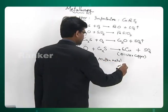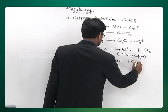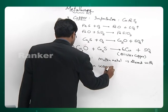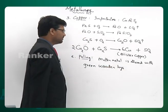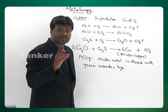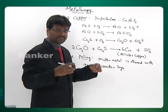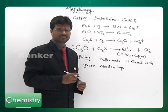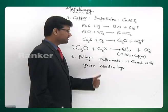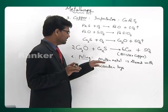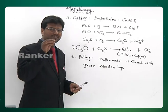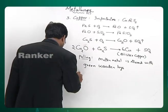In poling, the molten copper is stirred with green wooden logs or poles. The hydrocarbons present in the green wooden blocks volatilize and reduce any leftover copper oxide. If any traces of copper oxide are present they are reduced, and due to stirring, any volatile impurities also get a chance to escape. Poling is a very old technique still followed to some extent, and it helps reduce leftover copper oxide in the blister copper.